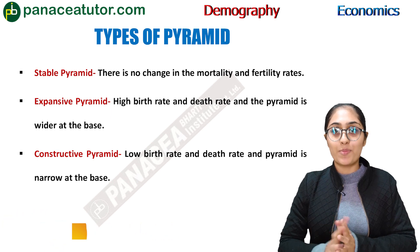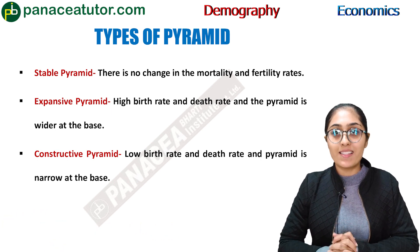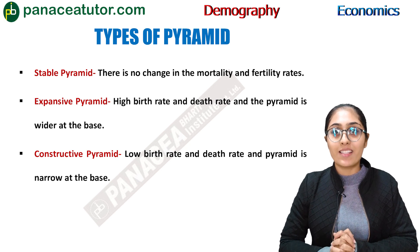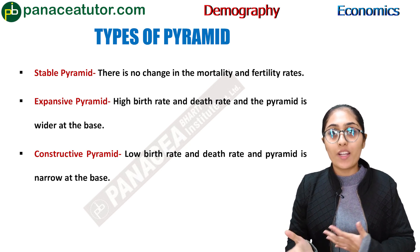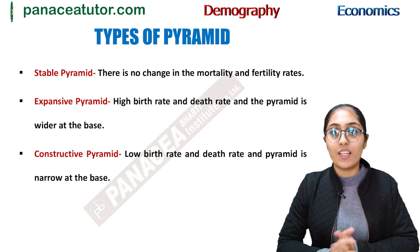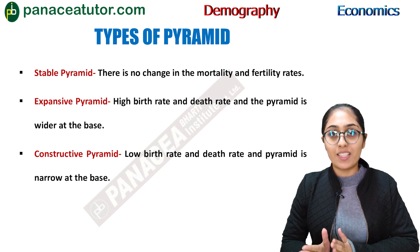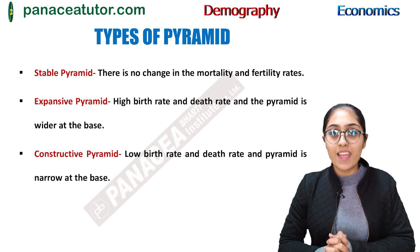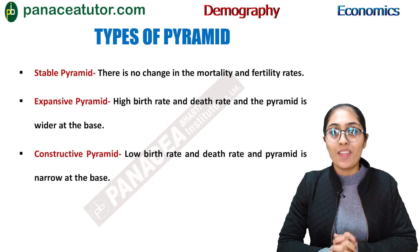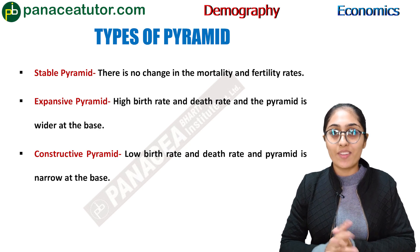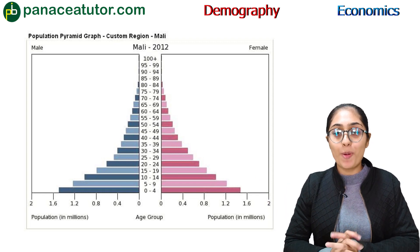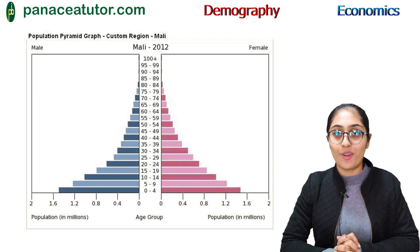There are three types of pyramid. First is the stable pyramid, second is the expansive pyramid, and third is the constructive pyramid. In a stable pyramid, there is no change in birth rates and death rates. In an expansive pyramid, birth rates and death rates are quite high. In a constructive pyramid, birth rates and death rates are quite low. The pyramid is shown on your screen — the growth rate of population is shown on the x-axis and the age distribution is shown on the y-axis.